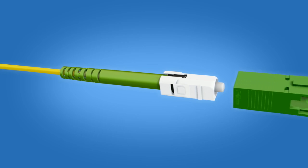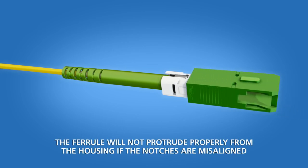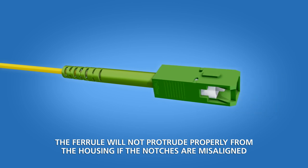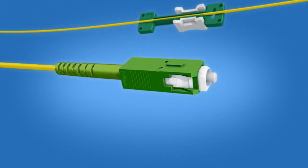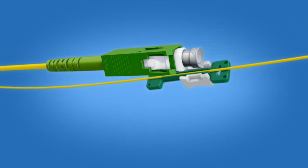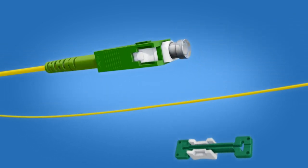Slide the connector housing onto the connector body. The key on the housing and the key on the boot should align. Push until a click is heard. Apply the dust cap and remove the cable clamp. The termination is now complete.